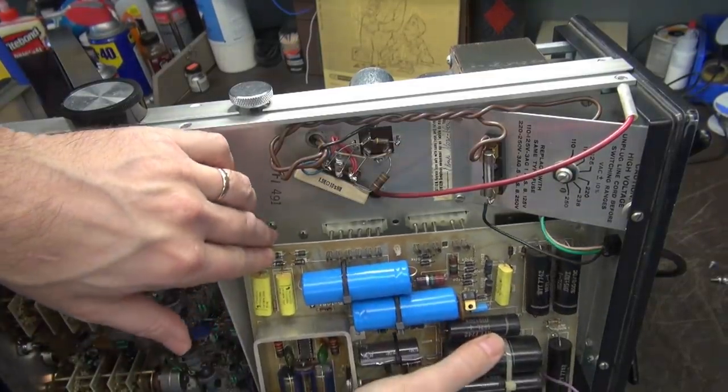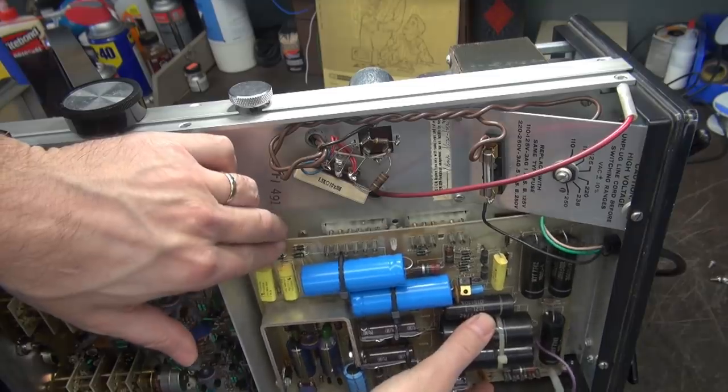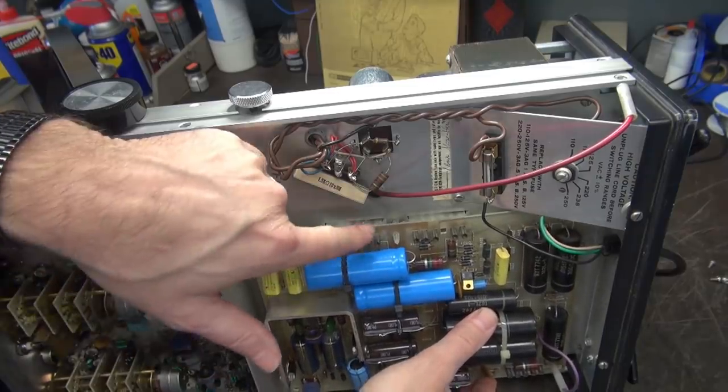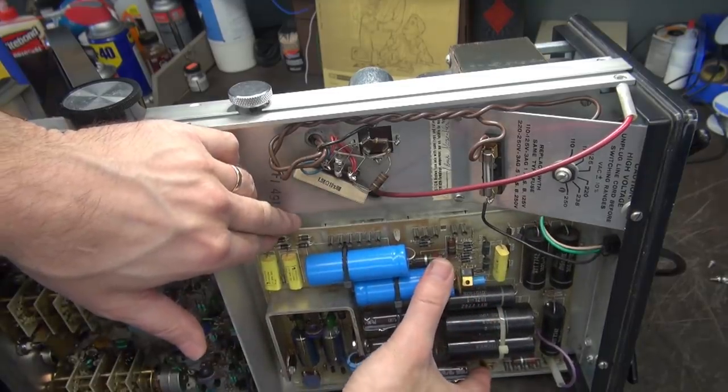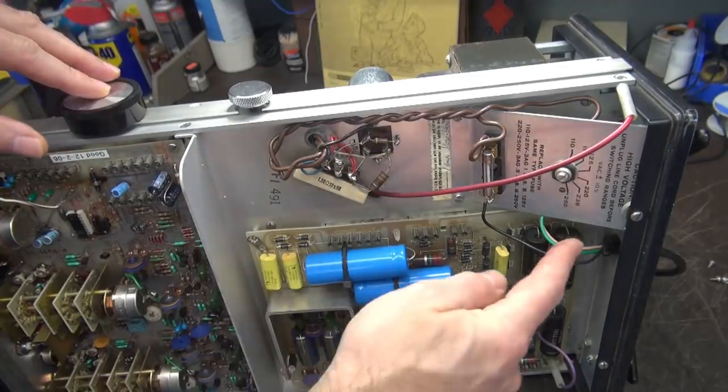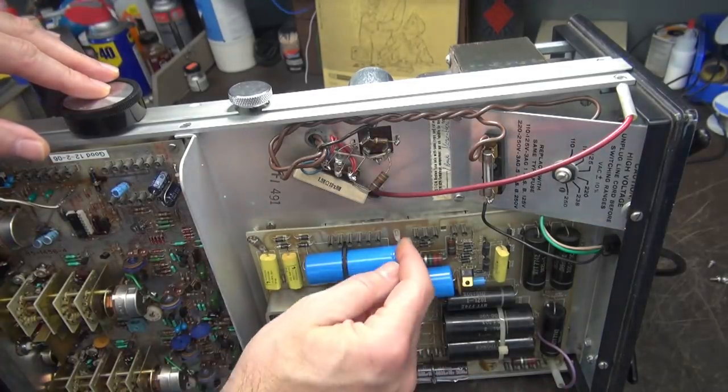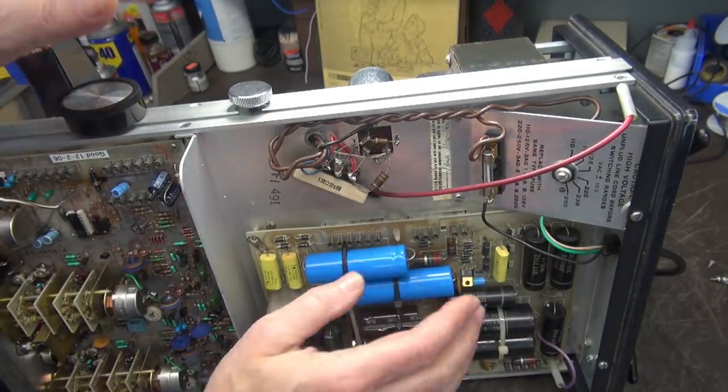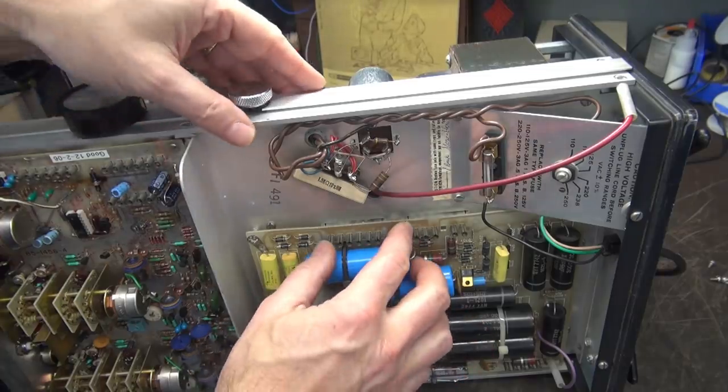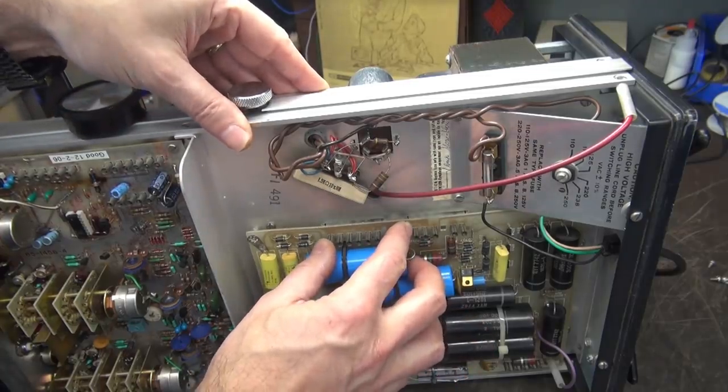So this board seats in here and you line up these molex type connectors. You push it in. There's four screws on the corners that held it. They had this post in the middle that back in the day used to lock into the chassis when you pushed it. But unfortunately that's wore out.